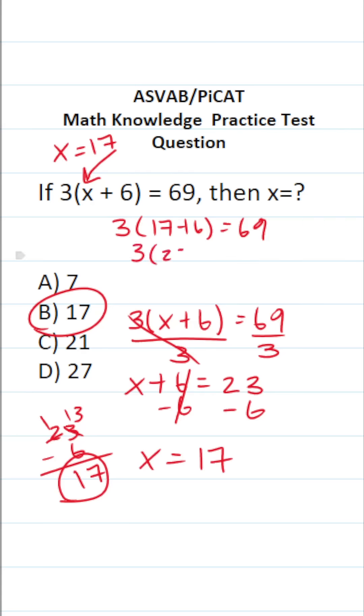This becomes 3 times 23 equals 69. This is 69 equals 69. Since this is a true statement, I'm confident that B is the correct answer.